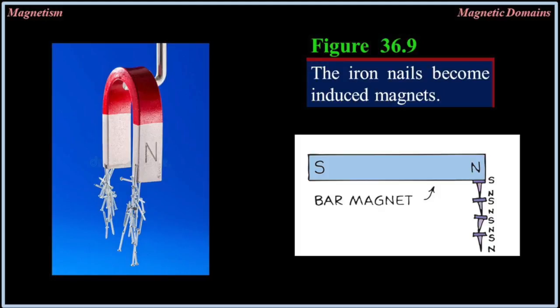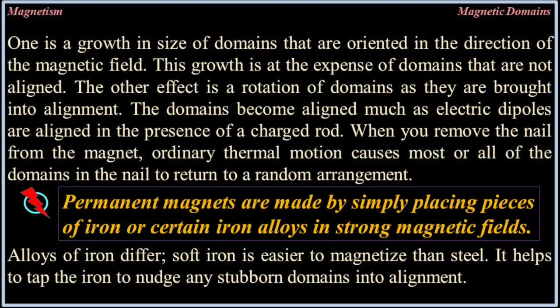The iron nails become induced magnets when a strong magnet is brought nearby. Two effects take place: one is a growth in the size of the domains that are oriented in the direction of the magnetic field, at the expense of domains that are not aligned. The other effect is a rotation of domains as they are brought into alignment, much as electric dipoles are aligned in the presence of a charged rod. When you remove the nail from the magnet, ordinary thermal motion causes most or all of the domains in the nail to return to a random arrangement.